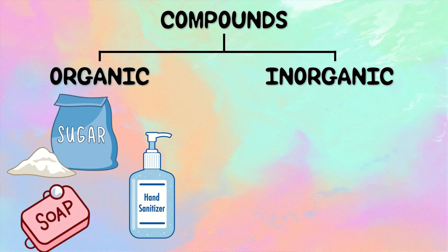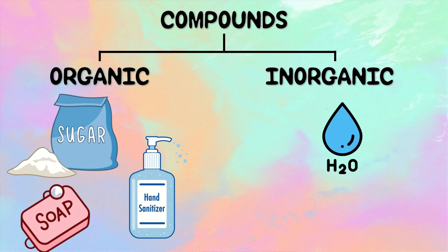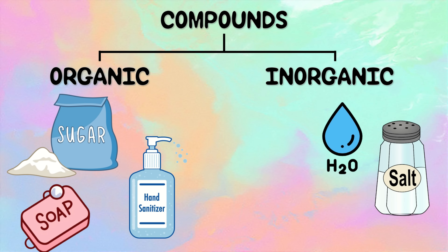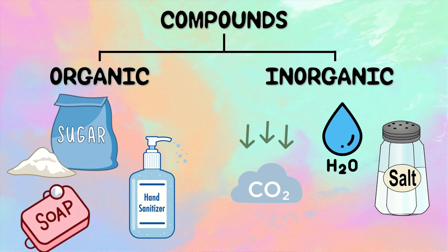On the other hand, we have inorganic compounds. Examples are water or H2O. Our bodies are composed of mostly water and it is necessary for us to survive. However, water is an example of an inorganic compound because it does not contain both carbon and hydrogen, and it was not formed by a living organism. Next example is table salt or sodium chloride that we usually see in our kitchen.